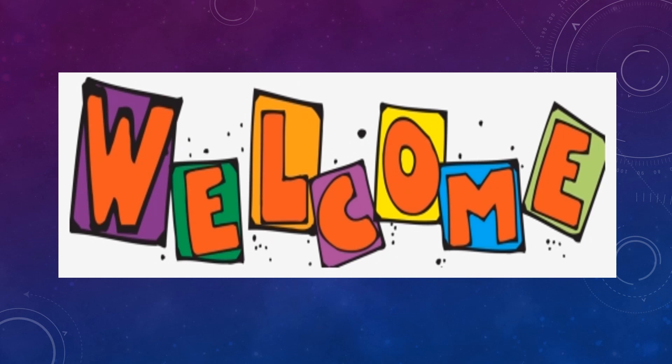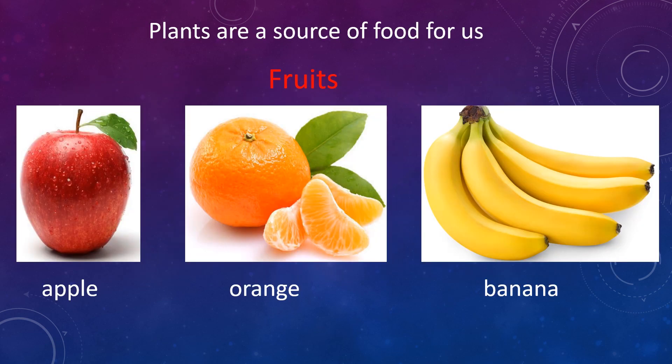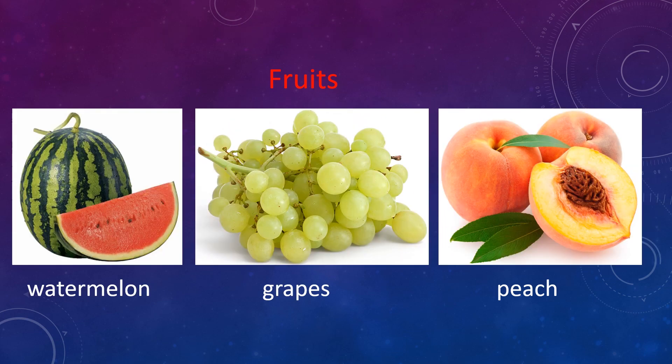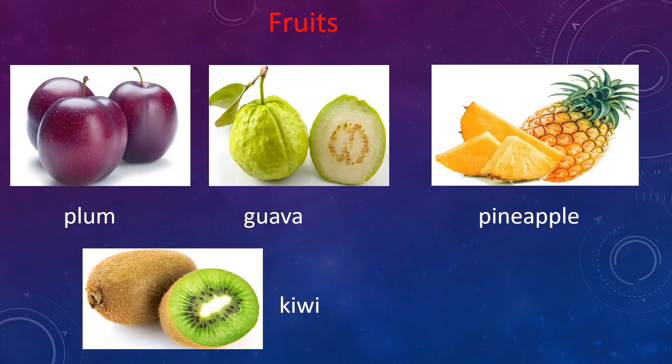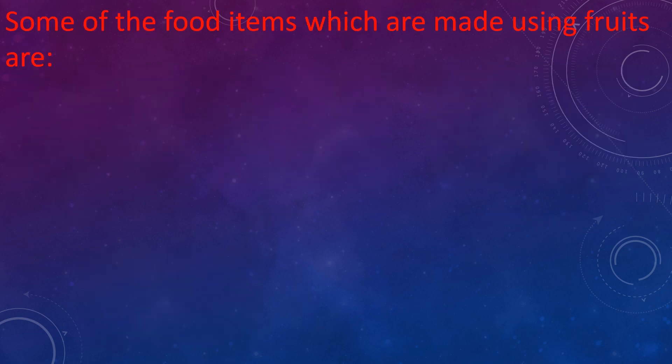Hello everybody and welcome back. Today we're going to learn about food from plants. Plants are a source of food for us in the form of fruits. To name some of the fruits, you can see the picture of apple, orange, banana, watermelon, grapes, peach, plum, guava, pineapple, kiwi, etc.